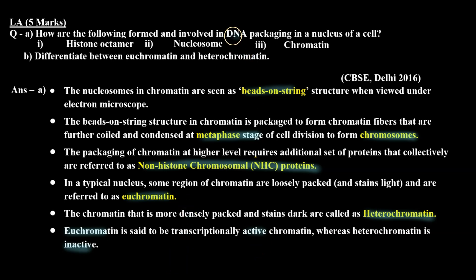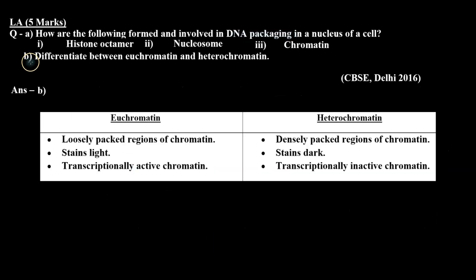We have explained DNA packaging in detail in a previous video — you can go and watch it there; the link will be pinned in the description box. Now in B part, we need to differentiate between euchromatin and heterochromatin. Euchromatin is the region of chromatin that is loosely packed, and heterochromatin is densely packed. Due to being loosely packed, euchromatin stains light and heterochromatin stains dark. Euchromatin is transcriptionally active and heterochromatin is inactive.